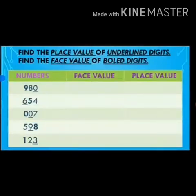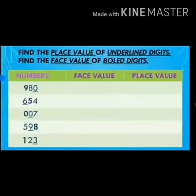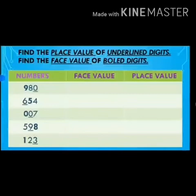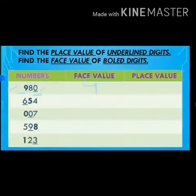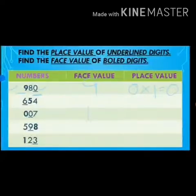This slide is your homework. Read the instructions properly and fill in the table. You will find the place value of the underlined digit and find the face value of the bold digit — bold digit means the darker digit. I will do the first one for you: 980. The face value of 9 — 9 is the darker digit — so the face value of 9 is 9. And the place value of the underlined digit: the underlined digit is 0, which is at the 1's place, so the place value of 0 is 0 × 1 = 0. The rest you will do as homework.